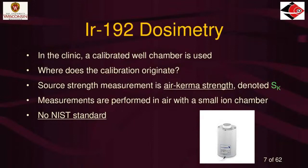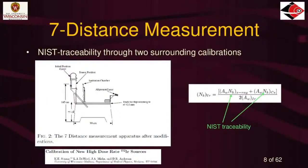For iridium dosimetry in a clinic, a calibrated well chamber is used. Where does that calibration come from? The source strength measurement uses air kerma strength, denoted S-sub-K. You don't use curies or activity — it's called air kerma strength. It is measured with a small chamber in air, but that standard is actually maintained at calibration labs, not NIST. In Wisconsin, we use the seven-distance measurement — a large device made out of acrylic. The source is suspended in air, and there's a small ionization chamber called an Exradin A3 chamber also suspended in air. We move the chamber to seven different distances from the source and solve for multiple unknowns involving scatter in the room, air attenuation, and the offset of the source.